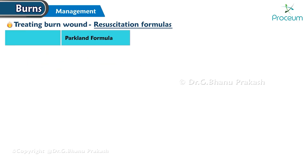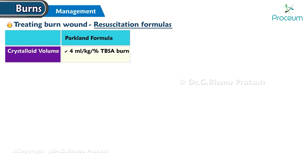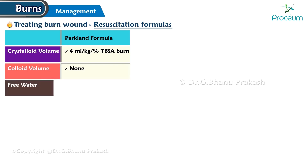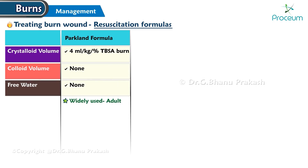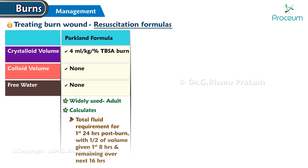Parkland formula: crystalloid volume — 4 milliliters per kilogram per percent total body surface area burned; colloid volume — none; free water — none. This formula is widely used for adult burn patients. It calculates the total fluid requirement for the first 24 hours post-burn, with half the volume given in the first 8 hours and the remaining over the next 16 hours.